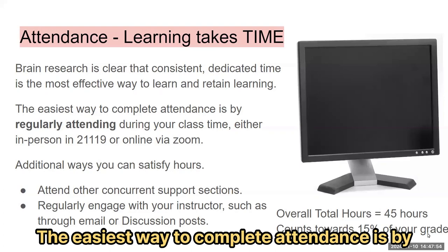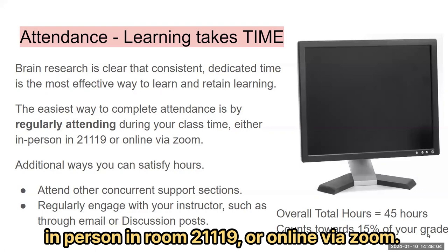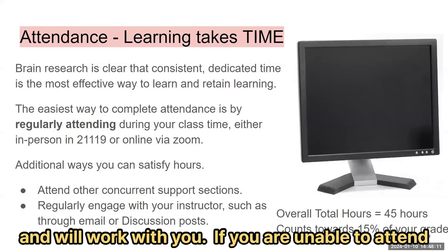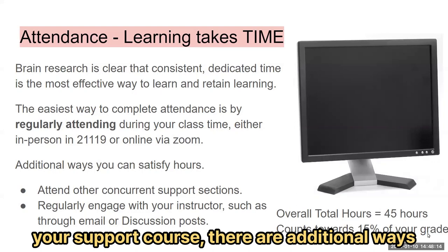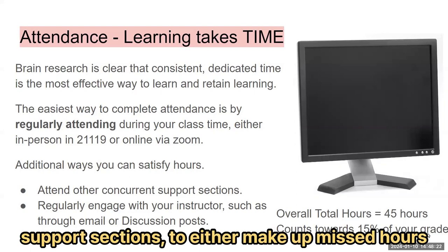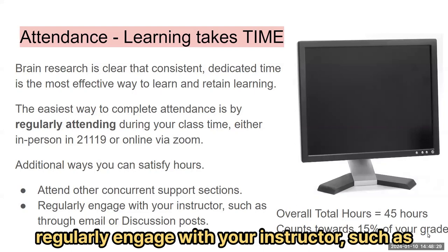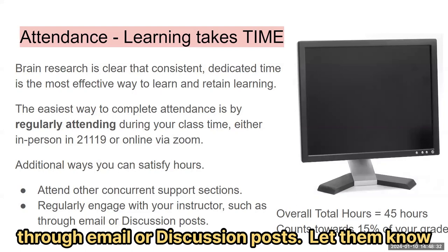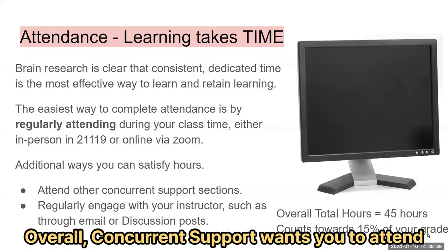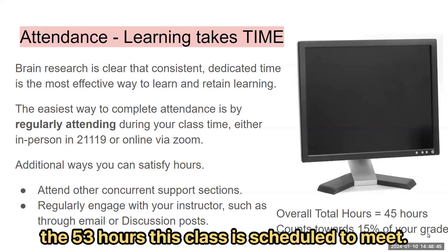Attendance will be taken each class to encourage consistent time dedicated to learning. The easiest way to complete attendance is by regularly attending during your class time, either in person in room 21-119 or online via Zoom. Sometimes life gets in the way, and we understand and will work with you. If you are unable to attend your support course, there are additional ways you can satisfy hours. We encourage you to attend other concurrent support sections, either to make up missed hours or to receive more support. If you need to miss class, we encourage you to regularly engage with your instructor through email or discussion posts — let them know how you're doing, what you're working on, or what you could use help with. Overall, concurrent support wants you to attend 45 total hours a semester out of the 53 hours the class is scheduled to meet.